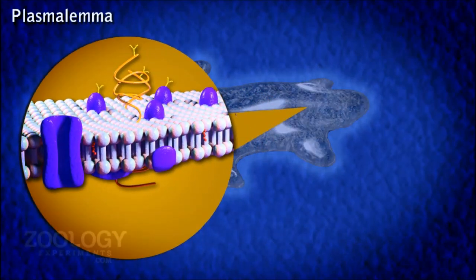Plasma Lemma. Amoeba is devoid of pellicle or cell wall. The body is covered by a very thin, delicate plasma membrane called plasma lemma.